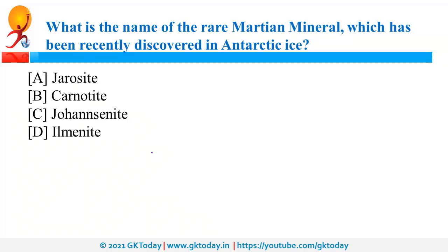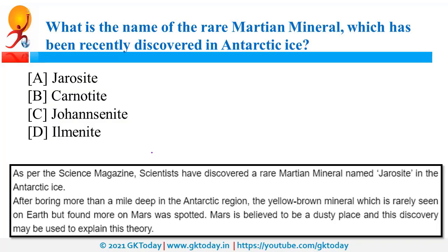The rare Martian mineral recently discovered in Antarctic ice is called Jarosite. It was discovered in Antarctic ice. It is a yellow-brown mineral and is rarely seen on Earth. Usually it is found on Mars, which is why it is called a Martian mineral. On the surface of Earth it is rarely found, but we discovered it in Antarctic ice.